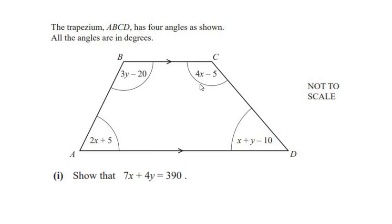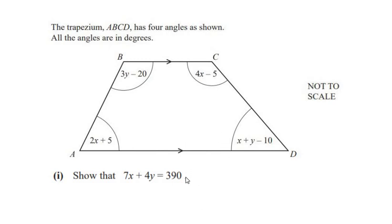Hello and welcome to my channel. In this video we are going to solve an example on algebra. The trapezium ABCD has four angles and all the angles are in degrees. Show that 7x plus 4y is equal to 390. A trapezium is a quadrilateral, which means when we add all the angles of the quadrilateral we should get 360 degrees. So let us write it down.